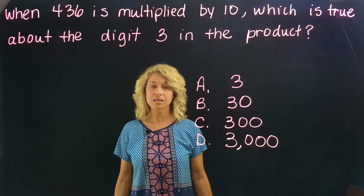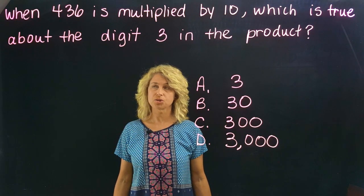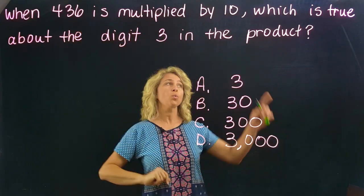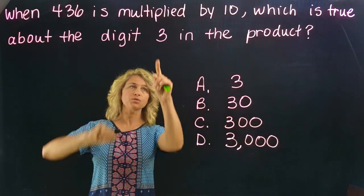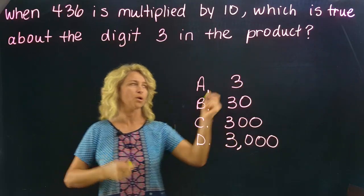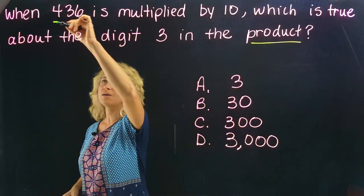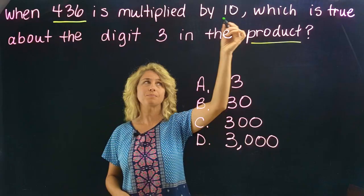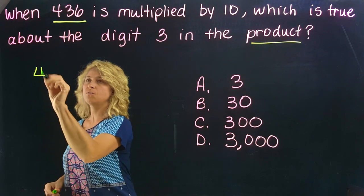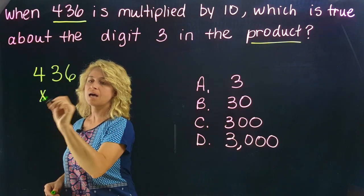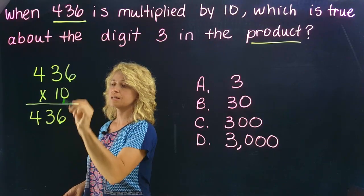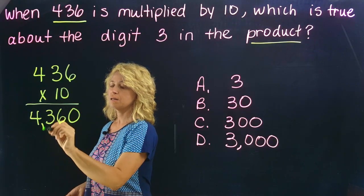Let's look at another type of problem, still with the same skill of times ten. When 436 is multiplied by 10, which is true about the digit 3 in the product? The word 'product' just means answer. We know that 436 multiplied by 10 — we know how to do that. So let's go ahead and solve: 436 times 10 is just 4,360 — add a zero to the end.